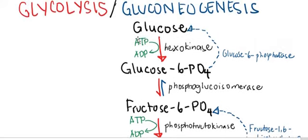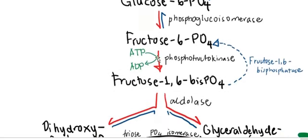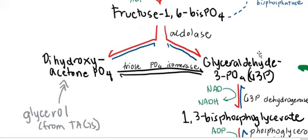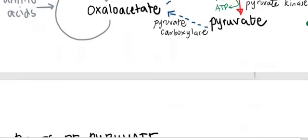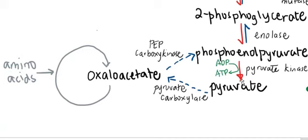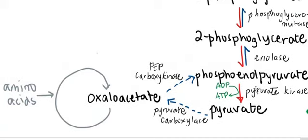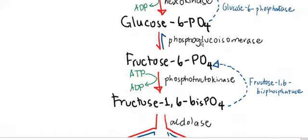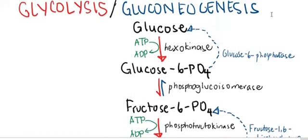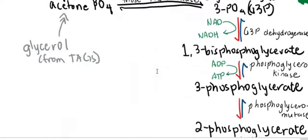There are three irreversible steps in glycolysis. Step 1, catalyzed by hexokinase, is irreversible. Step 3, catalyzed by PFK, is also irreversible. And step 10, catalyzed by pyruvate kinase, is the third. In order to perform gluconeogenesis — in other words, to reverse what is irreversible — we need other enzymes. Specifically, to go from pyruvate back to phosphoenolpyruvate (PEP), you need two enzymes: first pyruvate carboxylase to convert pyruvate to oxaloacetate, then PEP carboxykinase to go back to PEP.